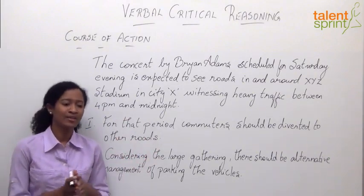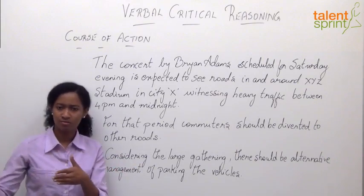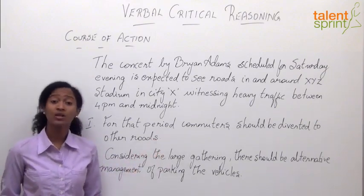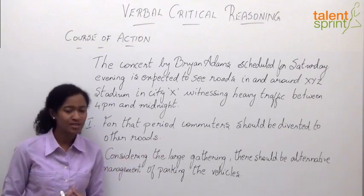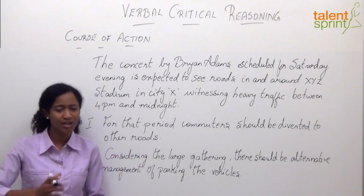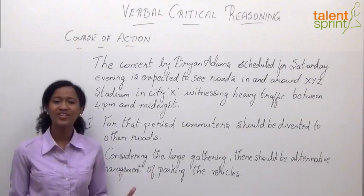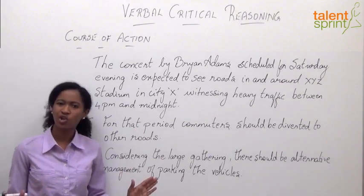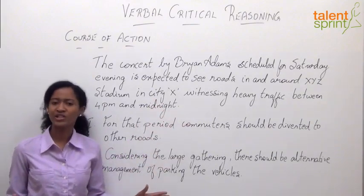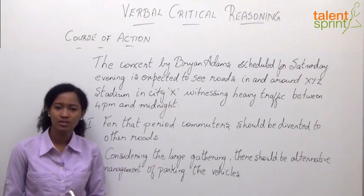Given the situation, when a major event is happening at a particular place, it only makes logical sense to direct traffic to other areas so there's less congestion. So the first course of action looks pretty logical. The second one — keeping in mind there's going to be a large gathering, you have to make sure there is enough space for parking. If that venue cannot hold the huge gathering, you'll have to look at alternate parking measures, which is exactly what the second course of action says. So both these courses of action logically follow suit. I'm going with option five — both one and two will logically follow, given the situation.